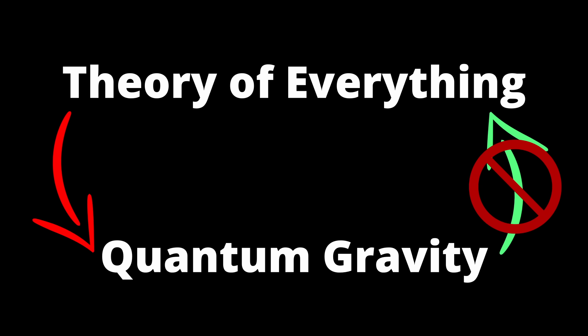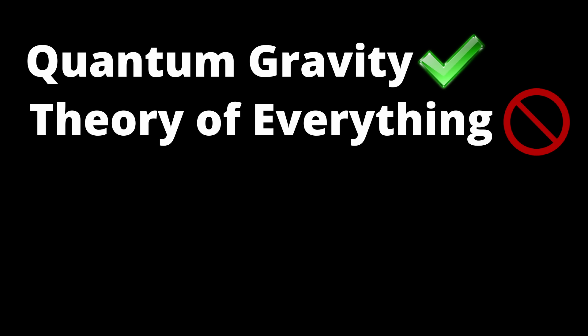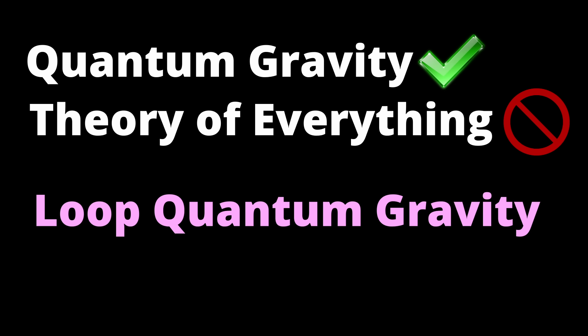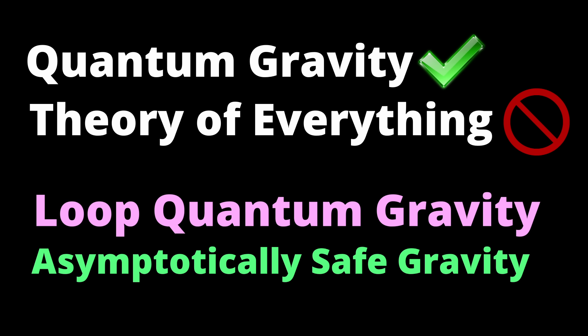However, the opposite is not necessarily the case. Yes, you can find a quantum description of gravity that still has the standard model of particle physics in a separate framework. This would then not be a theory of everything. An example for a theory that is quantum gravity but not a theory of everything is loop quantum gravity. It's the same with asymptotically safe gravity. Quantum gravity, yes. A theory of everything, no.